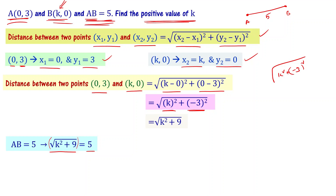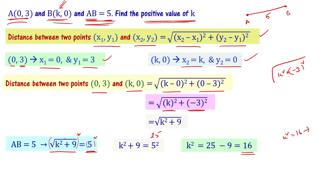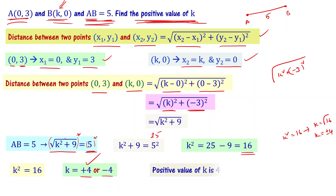Squaring both sides, the square root cancels, giving 5² = k² + 9, so k² + 9 = 25. Therefore k² = 25 minus 9 = 16. Taking the square root gives k = ±4. But since we are asked for the positive value of k, k = 4 is the answer.